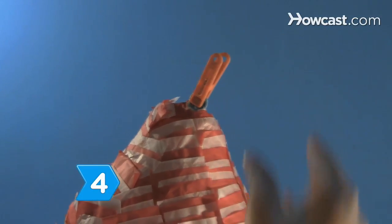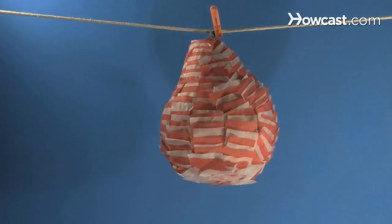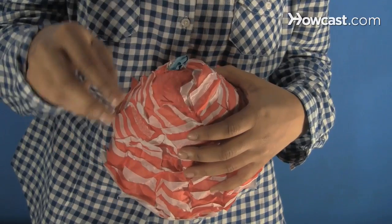Step 4. Attach a clothespin to the knot of the balloon and hang from the clothesline to dry. When dry, pop the balloon with the scissors near the knot and remove it through the knot hole.